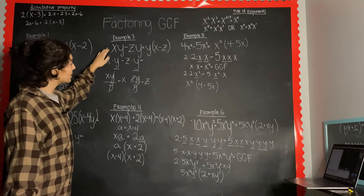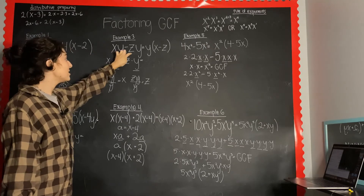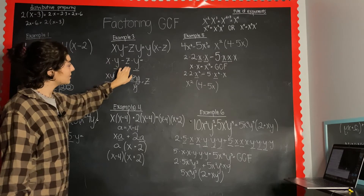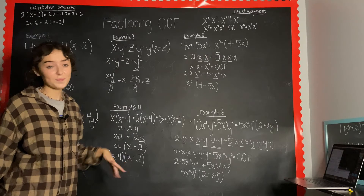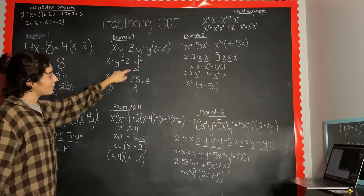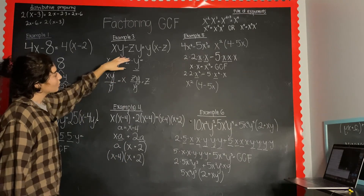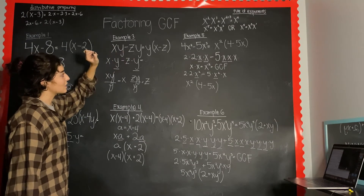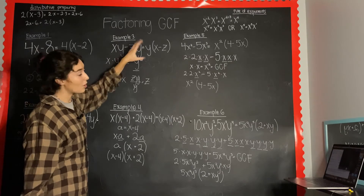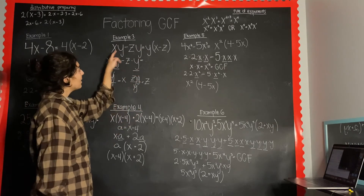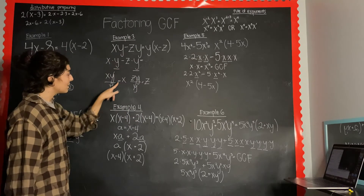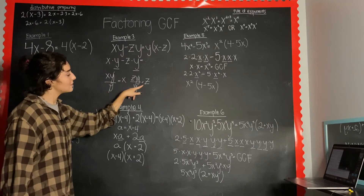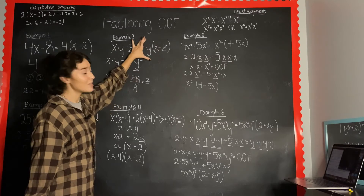Now we're given variables: xy minus zy. I'm putting a multiplication symbol between them so you can see their common factors more easily. In this case their common factor is y — I've underlined it. We divide the expression by the GCF: pull y out front, xy divided by y is x, zy divided by y is z. So the answer is y(x minus z).